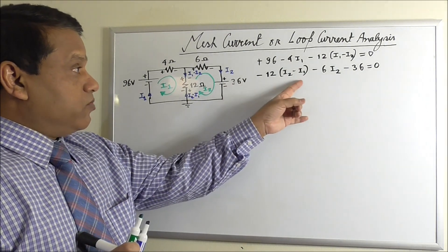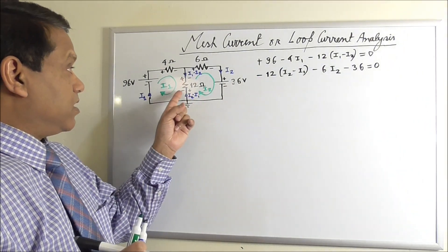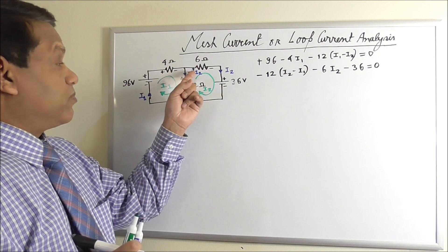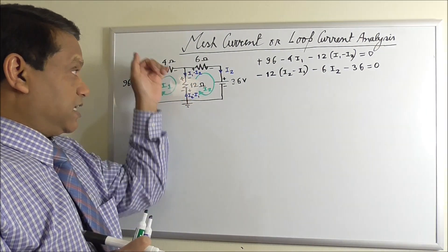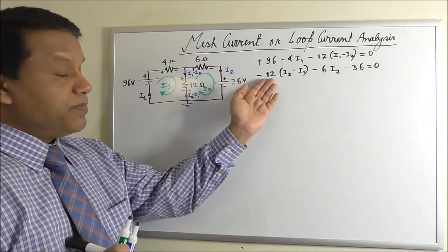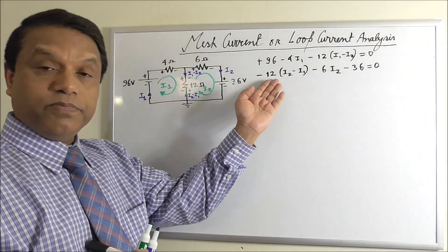Instead of writing minus 12 (I2 minus I1), it could have written plus 12 (I1 minus I2). That means you would have considered the sign on the left side and current I1 minus I2 downward. But that would have been the same thing. It wouldn't be any different.